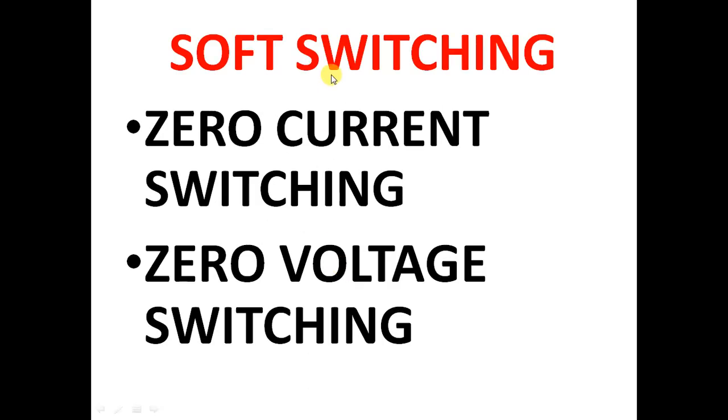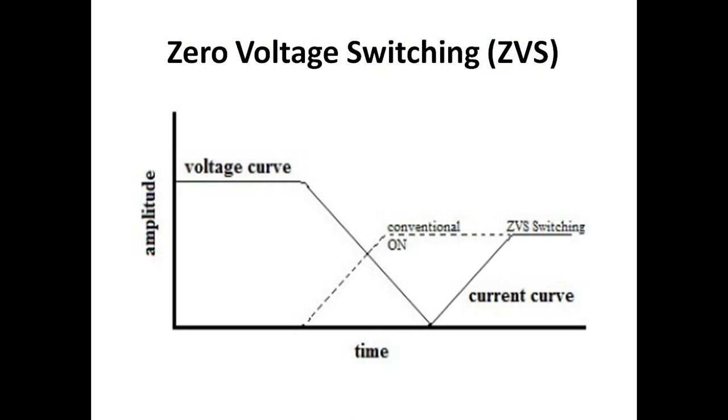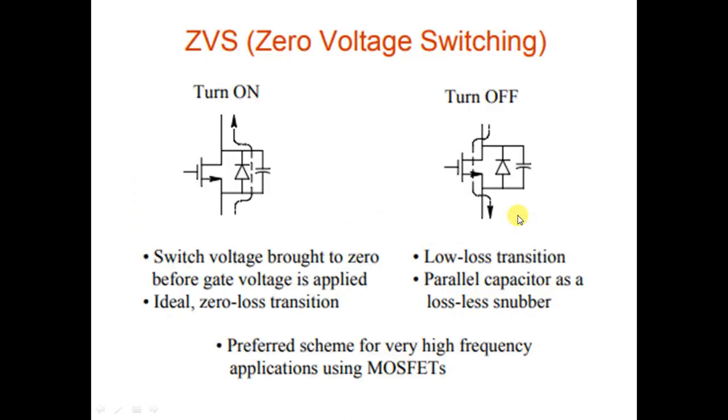Soft switching is classified into zero current switching and zero voltage switching. Zero voltage switching: after the voltage becomes zero, I turn on the device. In ZVS, I will use some inductance in the circuit and the internal capacitance of the device. This combination of L and C produces zero voltage in the capacitor voltage. So that can be used for ZVS.